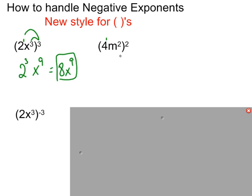Let's try another one. The exponent of 1 multiplies the outside exponent of 2, giving 4 to the 2nd. And m's exponent of 2 multiplies the outside exponent of 2, giving an exponent of 4. It simplifies down to 16m to the 4th.